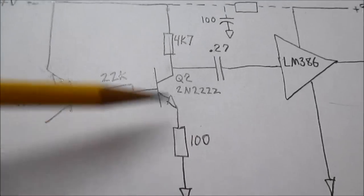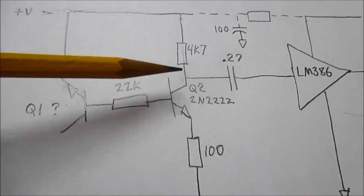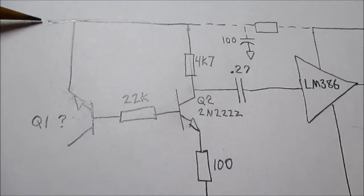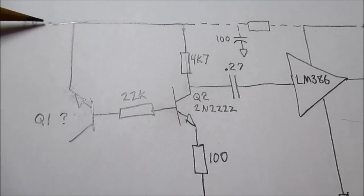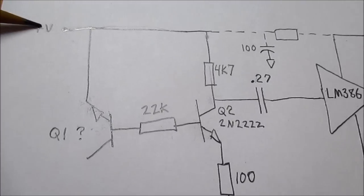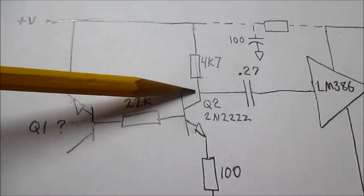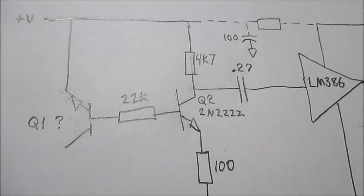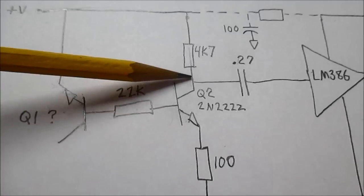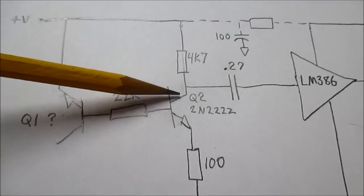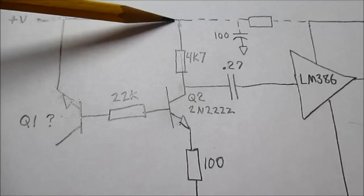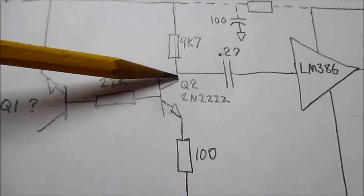So measure from ground to collector, you want somewhere around half the supply voltage. So if this works out to be like 8 volts, it should be around 4 volts, give or take a couple volts. It doesn't have to be perfect, but as long as it's not all the way at the rail here or ground, the collector voltage that is.